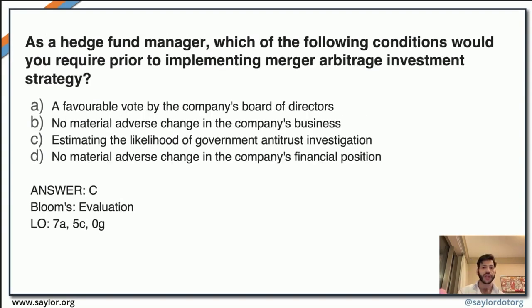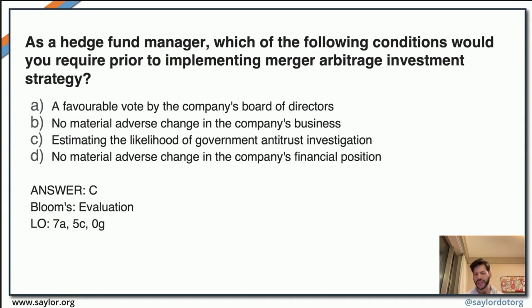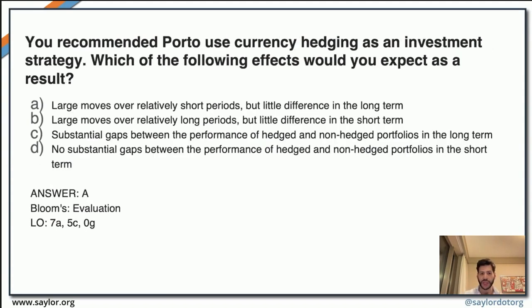This question is about another strategy — merger arbitrage investment — and asks what measures to consider before implementing a merger arbitrage investment strategy. All the answers are logical in theory, but one stands out: answer C, estimating the likelihood of a government antitrust investigation, is something that will be very important to consider at the center of attention. The answer for this question is C.